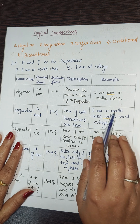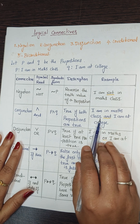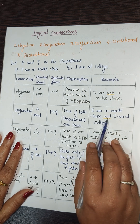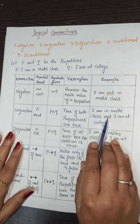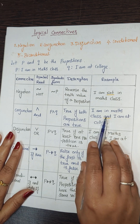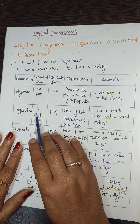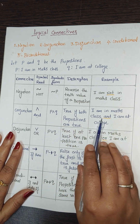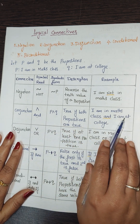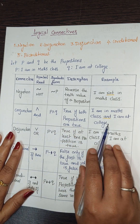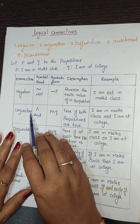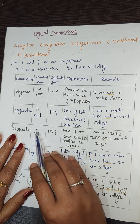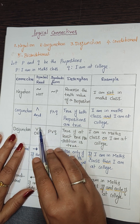For example, 'I am in maths class and I am at a college' — here 'and' is the connective. This is called the conjunction.